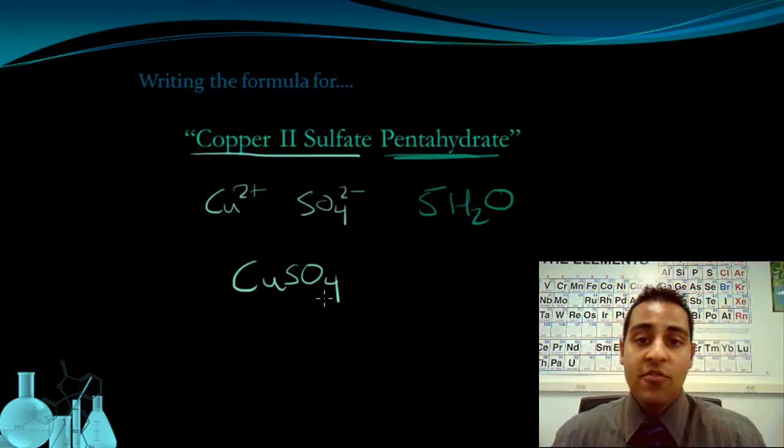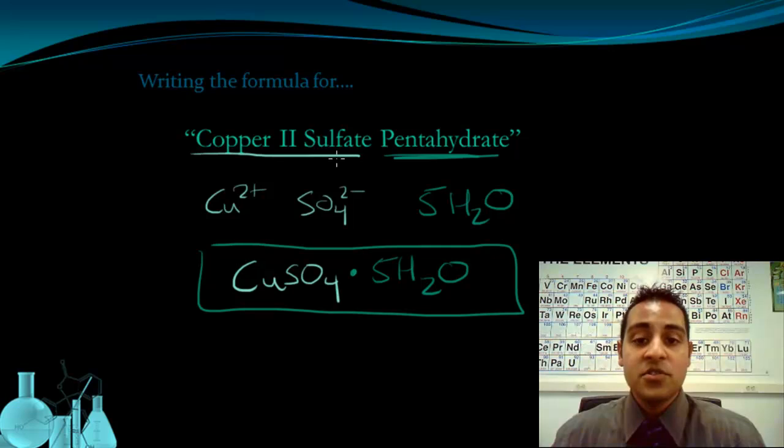So the overall formula for this, I'm going to put a dot next to the CuSO4 to indicate it's a hydrated salt. And I'm just going to write 5H2O. So this is my overall formula for copper 2 sulfate pentahydrate. I begin by naming the ionic salt and then identifying the number of waters based on this hydrate term in the name. Lastly, I use a dot to indicate that these waters are part of this hydrated salt.